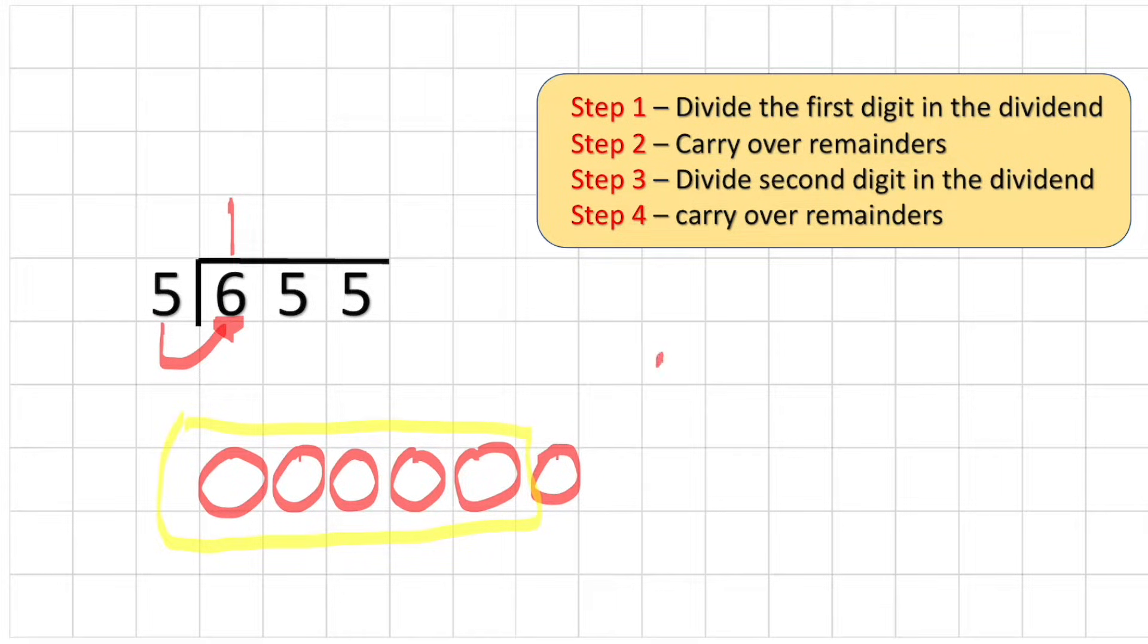So I have one group of five, but a difference here is that we now have this remainder. There's one remaining. So what I would do is I would carry that one into my next column, turning that five into a 15. And now I can look at step three, which is to divide the second digit.